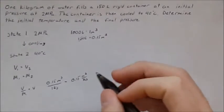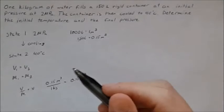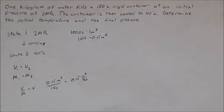The specific volume is the same for both state one and state two. Meaning we now have two intensive properties for both states and we can use the property tables to find what the initial temperature and the final pressure are.